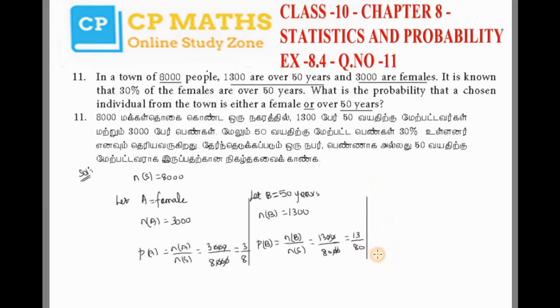Last and final: the data is A intersection B - that is female and over 50 years. They've given a clue that 30 percentage of the females are over 50 years. So 30 percentage of females - that's 30 percentage of the total females, 3,000. So 30 by 100 into 3,000. Canceling 200, we get 30 times 30 equals 900.